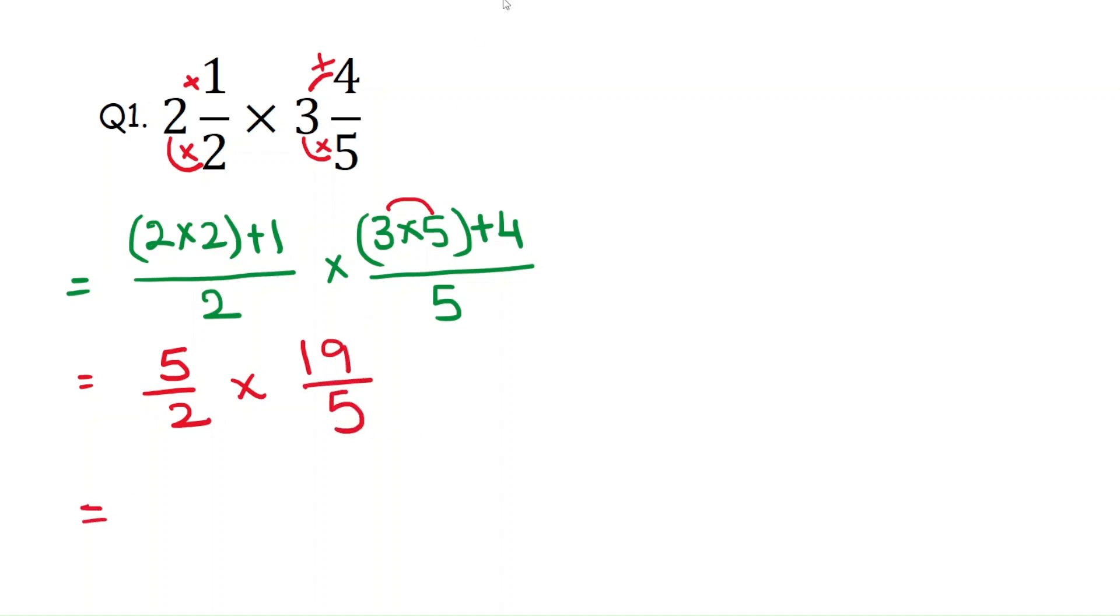That will be 5 times 1 is 5 and 5 times 1 is 5. So you can cross 5 and 5. This will be 19 by 2.